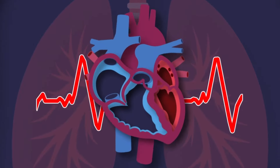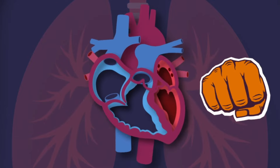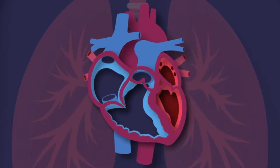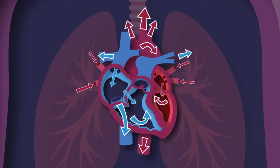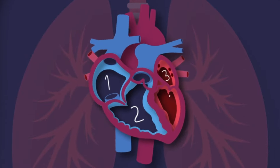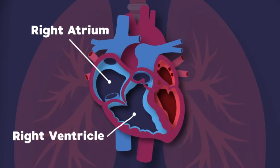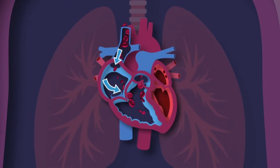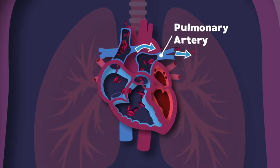I'm your heart — I live inside of your chest, about the size of your fist, and I never take a rest. I'm your heart — you couldn't live without me. I pump the blood that fuels your body, so take care of me please. The human heart is made up of four major chambers. The right atrium and right ventricle are the first two — they receive blood that's low in oxygen from your whole body and send it to your lungs through your pulmonary artery.